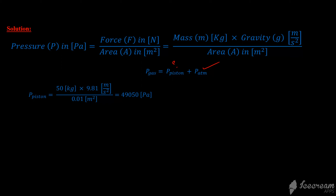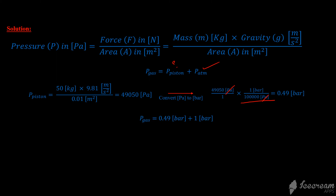The problem asks for pressure in bar, so we convert: using the conversion factor that one bar equals 100,000 Pascals, the Pascal units cancel and the piston pressure is 0.49 bar. Therefore, the gas pressure equals 0.49 bar plus the atmospheric pressure of one bar, giving a final answer of 1.49 bar. This is the pressure required for the gas to initially start moving the piston.